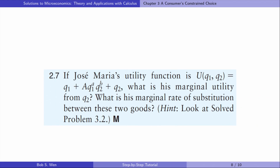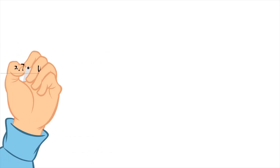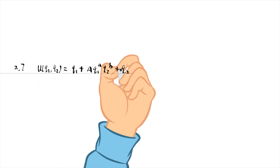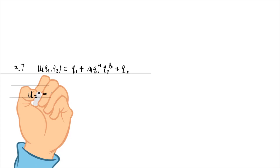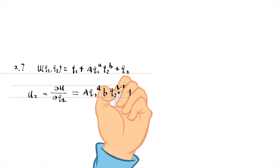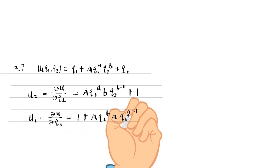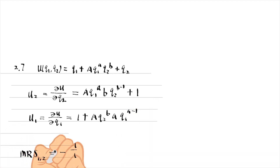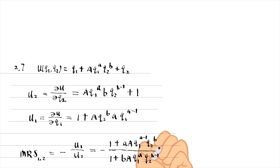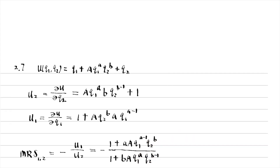Let's solve exercise 2.7. If the utility function is as follows, what is the marginal utility from Q2? What is the marginal rate of substitution between these two goods? In the first step, we write the marginal utility of good two and the marginal utility of good one. In the second step, we plug them into the formula for the marginal rate of substitution MRS between good one and good two.